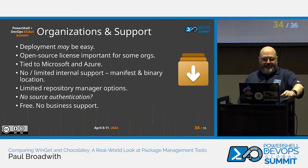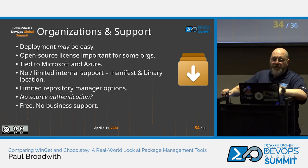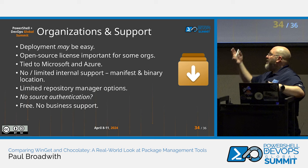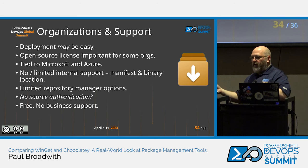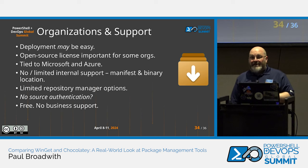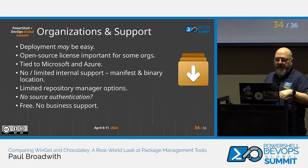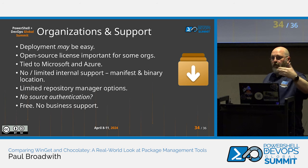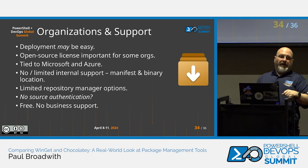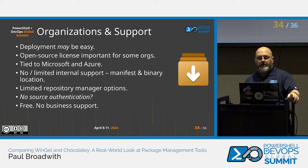Organizational options. For WinGet deployment: it may be easy depending on which installation method works for you — it's MIT licensed, which organizations love since they can do as they please without legal involvement. The problem for organizations is that WinGet is very tied to Microsoft and Azure. The Azure REST source is the main repository option, and if you're not in the Azure ecosystem, that could be problematic.